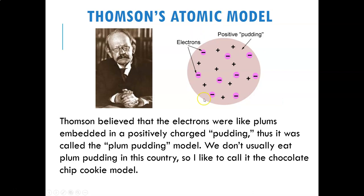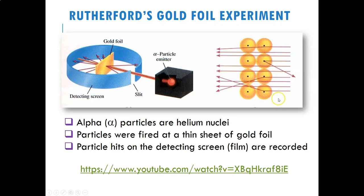That was a great model at the time, but then came Rutherford. Rutherford figured out that this is not how things are arranged. Rutherford used something called the gold foil experiment. This is probably one of the most famous, most important experiments there is. It is one of the few that we need to know by name, and we need to know who did it. It radically changed our perception of the atom and really sent people in a certain direction trying to learn more about the model of the atom.